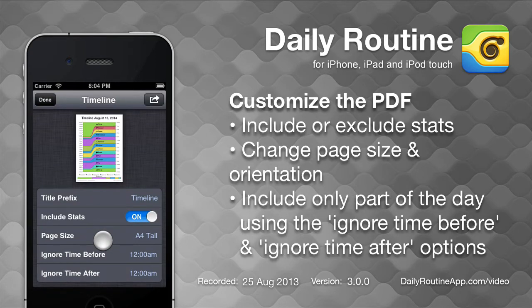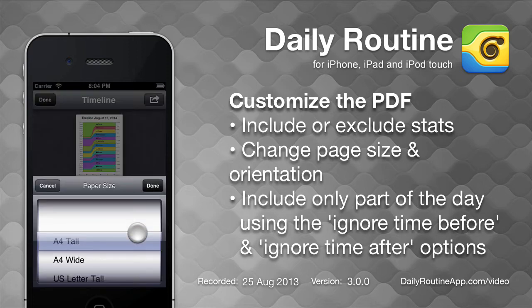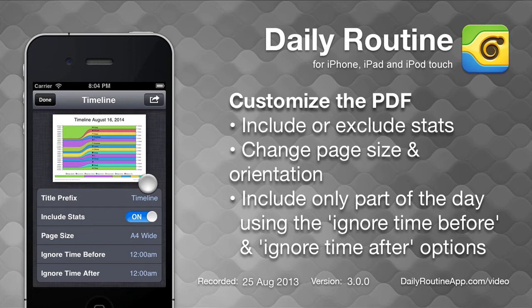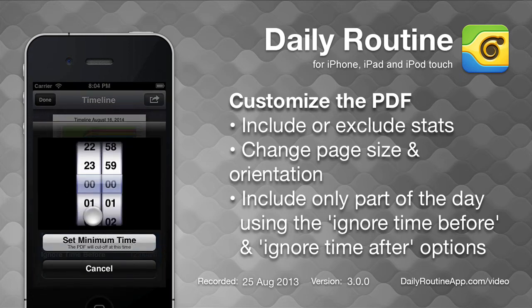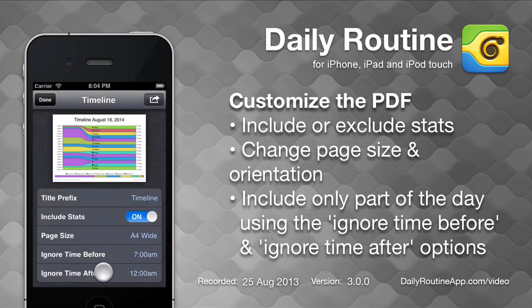We then see a preview of the PDF that will be generated. We can use the 'Include Stats' option to include or exclude a breakdown of the day's activities in the PDF. We can change the page size and orientation by editing the page size option. We can control which part of the day appears in the PDF by editing the 'Ignore Time Before' and 'Ignore Time After' options.